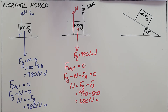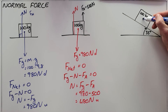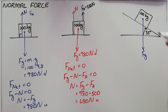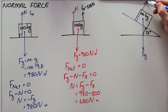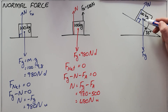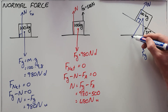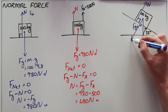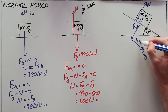The final example is an object on an inclined plane, which is slightly more complicated because in this case the gravitational force is not equal but opposite to the normal force. The gravitational force acts vertically downwards, whereas the normal force acts perpendicular to the surface by definition. To calculate the normal force, we need to find the component of gravity that acts perpendicular to the surface, by resolving the gravitational force into its two components: Fg perpendicular and Fg parallel, though Fg parallel is not needed at this moment.